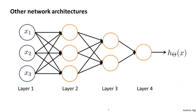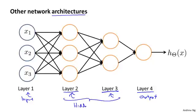But just to point out, you can have neural networks with other types of diagrams as well. And the way that neural networks are connected, that's called the architecture. So the term architecture refers to how the different neurons are connected to each other. This is an example of a different neural network architecture. And once again, you may be able to get this intuition of how the second layer, here we have three hidden units that are computing some complex function maybe of the input layer. And then the third layer can take the second layer's features and compute even more complex features in layer three. So that by the time you get to the output layer, layer four, you can have even more complex features of what you were able to compute in layer three. And so you get very interesting nonlinear hypotheses. By the way, in a network like this, layer one is called an input layer. Layer four is still an output layer. And this network has two hidden layers. So anything that's not an input layer or an output layer is called a hidden layer.